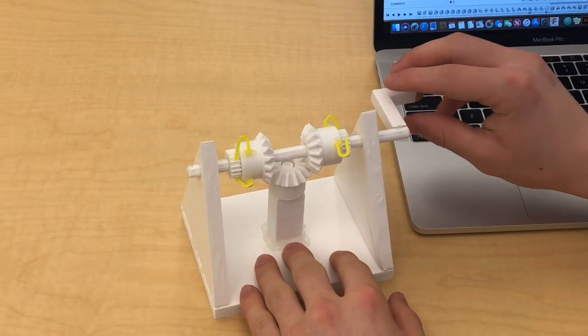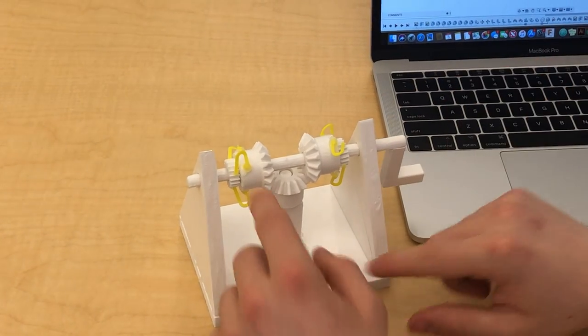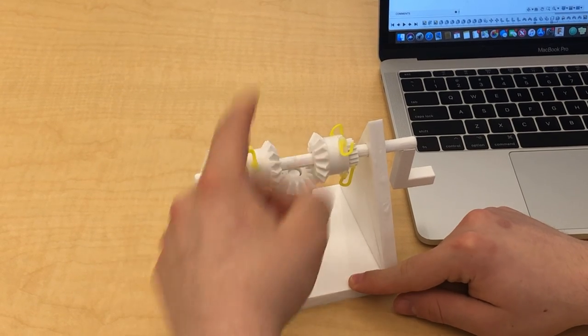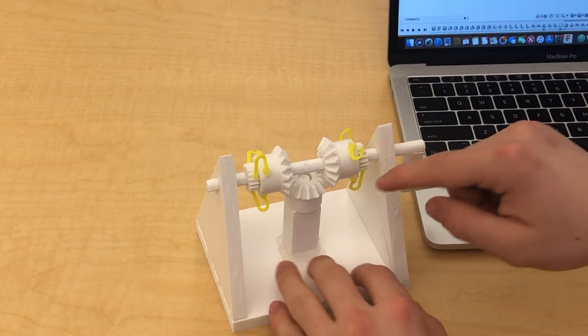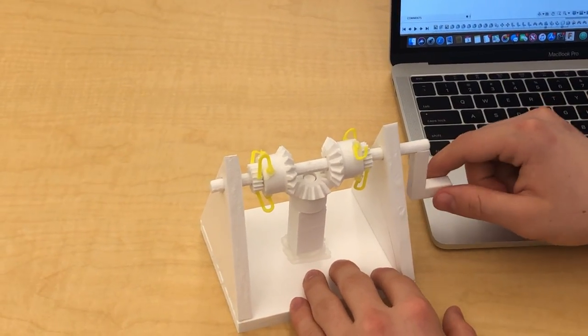What happens is depending on the way that the handle is turned, the pawls either lock into the ratchet and push the bevel gears or they slip over the edges. This means that the middle gear is only going to move counterclockwise no matter how you spin the handle.